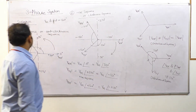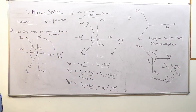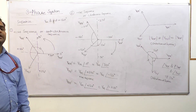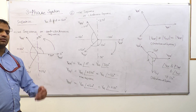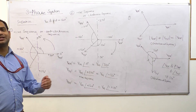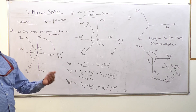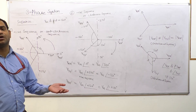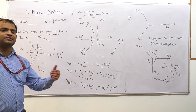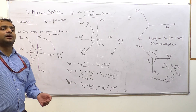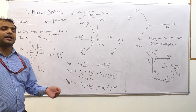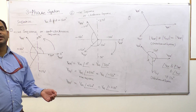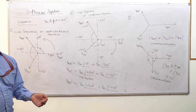This concludes balanced and unbalanced systems and positive and negative sequence. In the next lecture, we will explain what is phase and line voltage, the types of three-phase systems — star or delta connected — and the relationship between line and phase voltage in case of star and delta connections. Thank you.